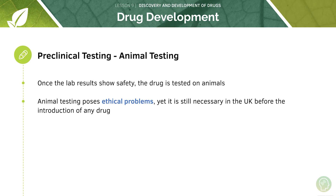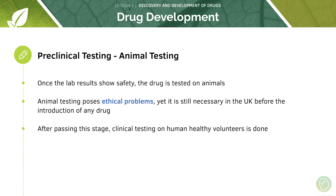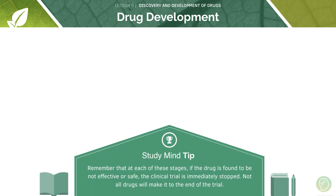Animal testing poses ethical problems and can cause quite an uproar amongst people who feel strongly against it, but it is still necessary in the UK before the introduction of any drug. After passing the animal testing stage, only then are drugs tested on healthy human volunteers. At any of these stages, if the drug is found to be ineffective or not safe, the clinical trial is immediately stopped. A very small percentage of drugs actually make it to the end of all five steps in the trial.